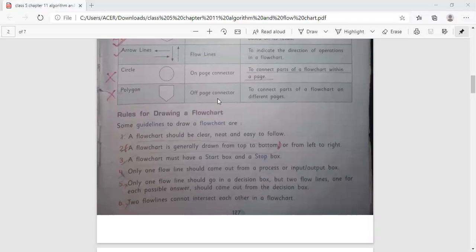Now what are the rules of drawing a flowchart? Some guidelines to draw a flowchart are: First, a flowchart should be clear, neat and easy to follow. A flowchart is generally drawn from top to bottom or from left to right. A flowchart must have a start box and a stop box. Only one flow line should come out from a process or input output box. Only one flow line should go in a decision box but two flow lines, one for each possible answer, should come out from the decision box. Two flow lines cannot intersect each other in a flowchart.